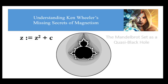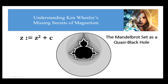If you read my paper, 'The Mandelbrot Set as a Quasi-Black Hole,' which will be linked in the description below, you will find that the black region of the Mandelbrot set are the points whose trajectories contract counter-spatially when iterated through the function z equals z squared plus c. The black region of the Mandelbrot set therefore corresponds to the domain of counterspace. The outer gradient region are the points whose trajectories expand spatially, and therefore the outer gradient region corresponds to the domain of space. The Mandelbrot set can therefore be considered as a graph of the domains of space and counterspace.